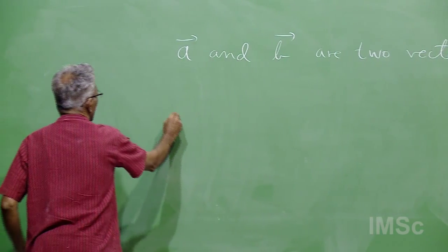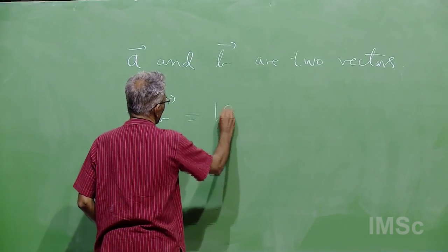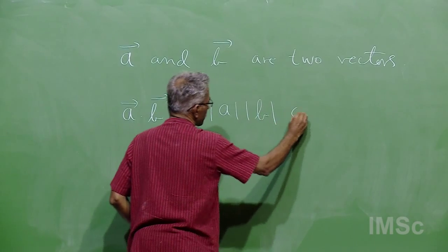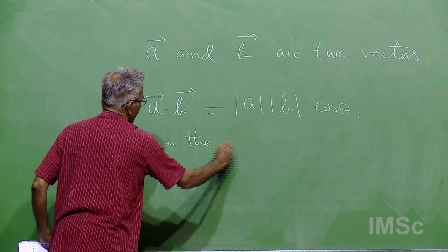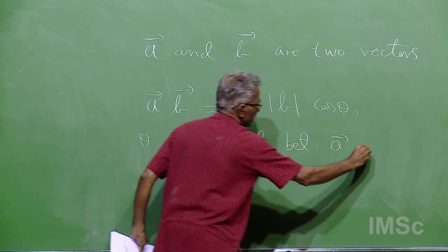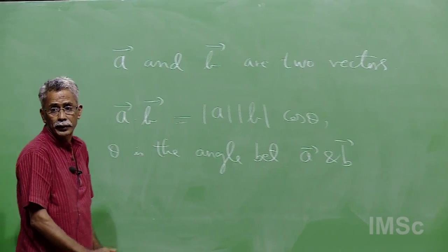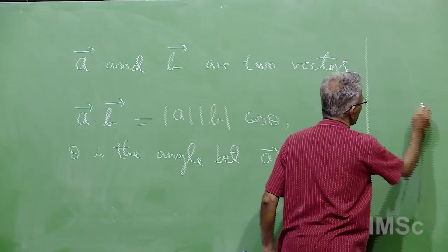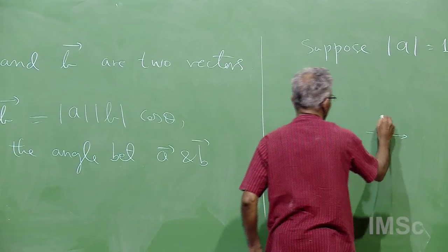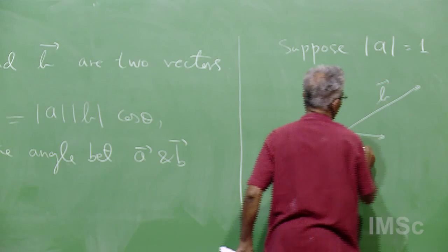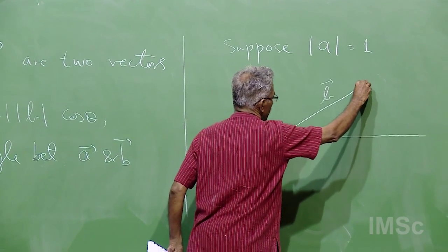What is scalar product? Suppose A and B are two vectors — we do not usually bother to put the arrow mark, it is understood they are vectors. So A dot B, you can define this to be the length of A times the length of B times cos θ, where θ is the angle between A and B. But you should imagine — suppose for a minute that A is a unit vector.